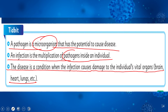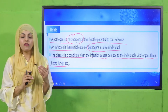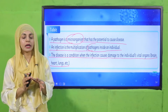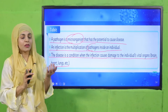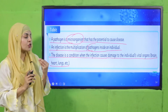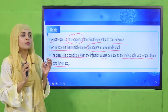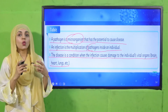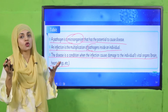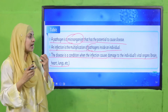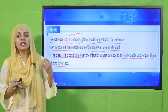A pathogen is a microbe — it could be a virus, bacteria, or fungi — that causes diseases. Such microbes that cause and spread diseases are called pathogens. Infection occurs when these pathogens multiply inside a person, animal, or plant. Disease is the condition when your organs — brain, heart, or lungs — get affected by these pathogens.